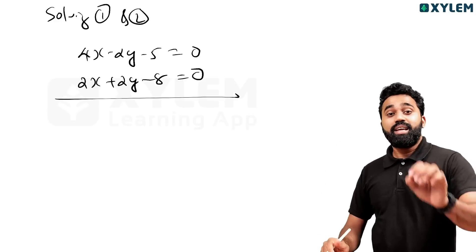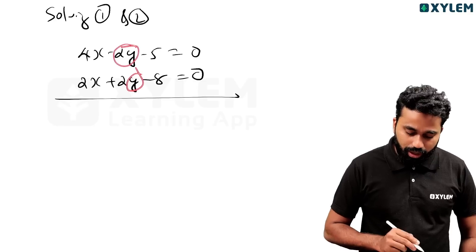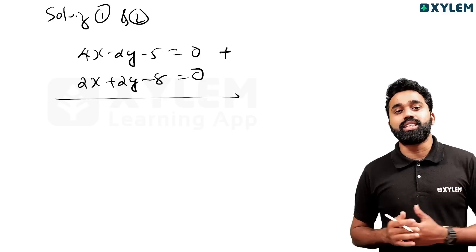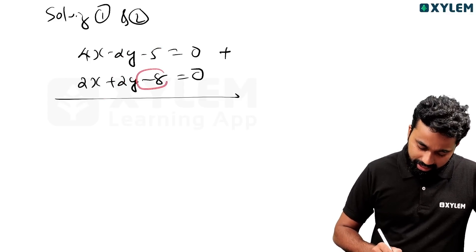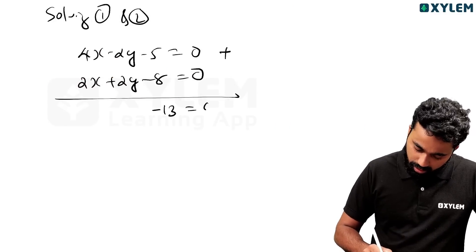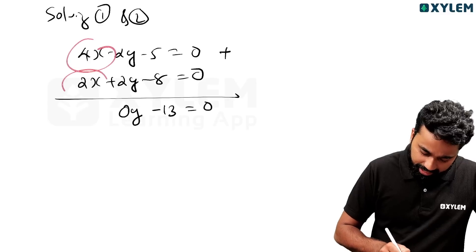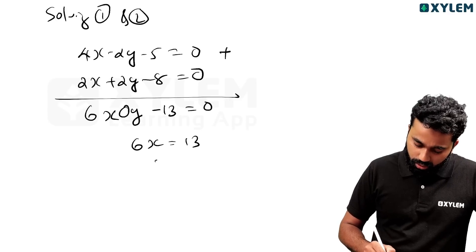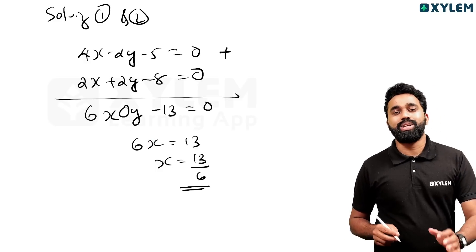In the first class we have three chapters of pairs of equations. Now you can do two equations. We have to add: minus 5 minus 8 equals minus 13, and minus 2y plus 2y is equal to 0, and 4x plus 2x is equal to 6x. 6x minus 13 is equal to 0, so x is equal to 13 by 6.